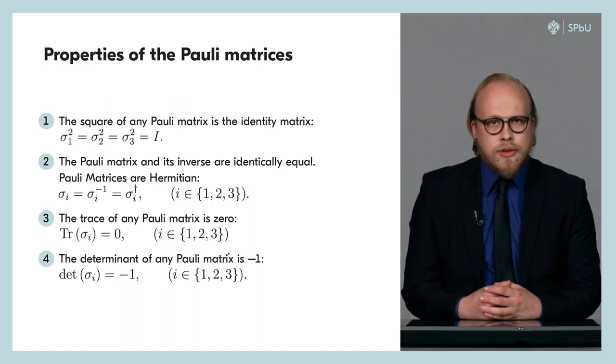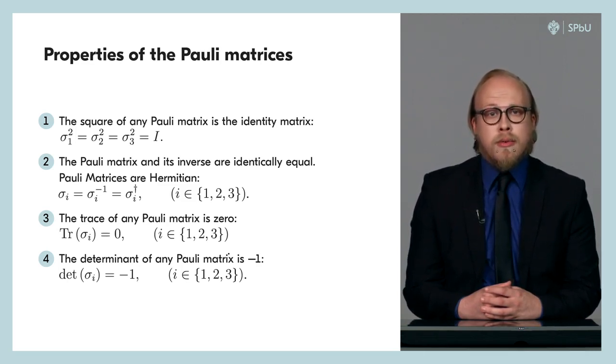Finally, the third property and the fourth property: the trace of any Pauli matrix is zero and the determinant is minus one, which again follows from their explicit form and could be easily verified.